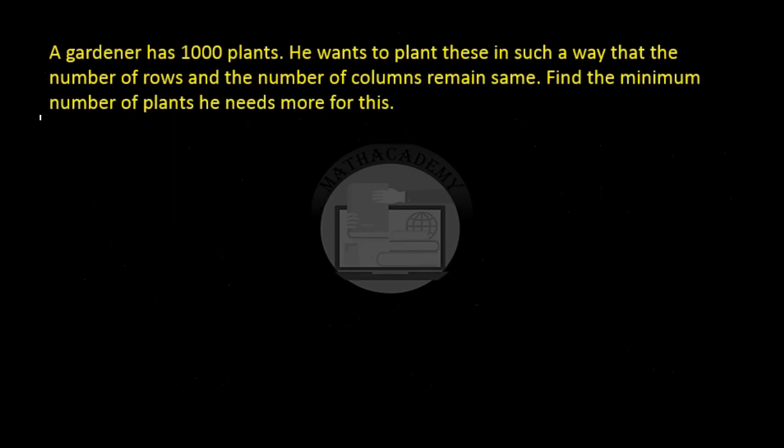Let us see one word problem. A gardener has 1000 plants. He wants to plant these in such a way that the number of rows and the number of columns remain the same. Find the minimum number of plants he needs for this.